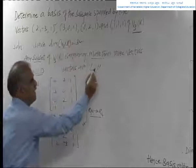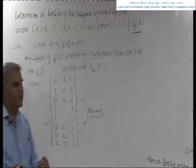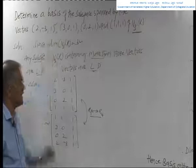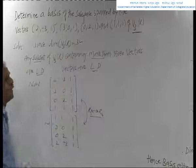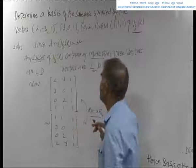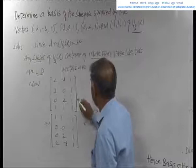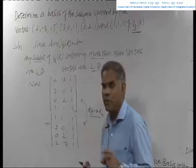Therefore, these 4 vectors are clearly linearly dependent. We have to find the basis of the subspace spanned by these 4 vectors. To do this, we treat each vector as a row of a matrix — first vector in the first row, second vector in the second row, third vector in the third row, and fourth vector in the fourth row. Now we use elementary row operations.